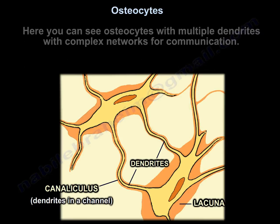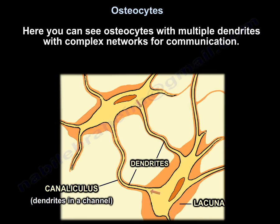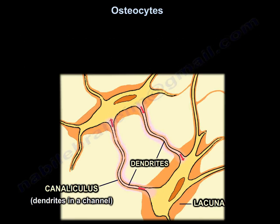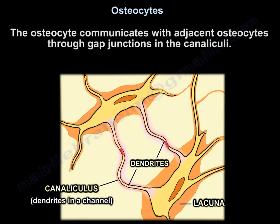Here you can see osteocytes with multiple dendrites forming complex networks for communication. The osteocyte communicates with adjacent osteocytes through gap junctions in the canaliculi.